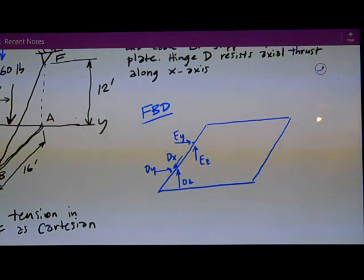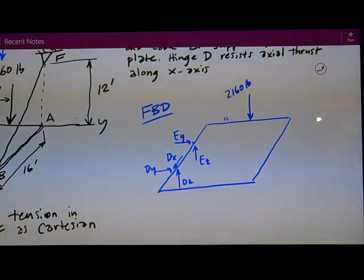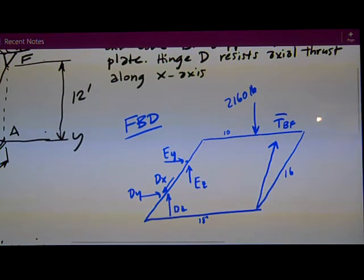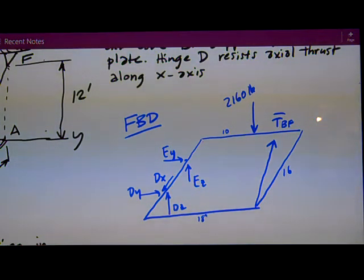Then I've got the 2160 pounds, and it is acting 10 feet. I end up not needing what the dimensions of those hinges are, but they are equally spaced along the X-axis. Then I've got the force in the cable, something like that. That would be TBF. It's a vector. And that's really all I need. I've got 18 feet over here and 16 feet over here. There's a good free body diagram that gives me a good start.